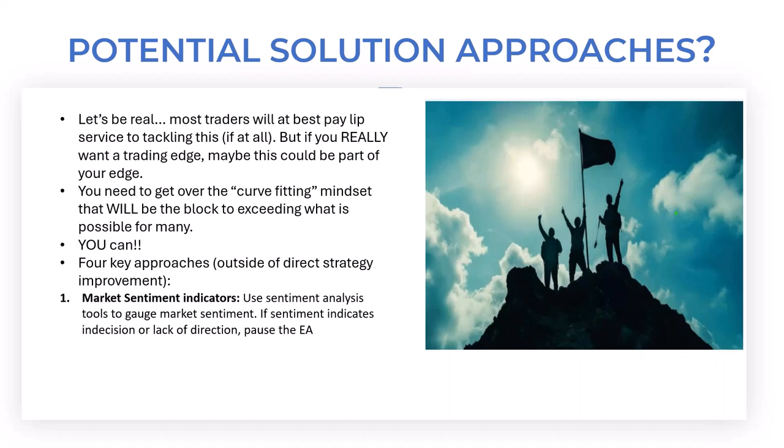For example, one of our simpler models — the EMA cross — is based on a simple cross of a 15 MA, but we want confirmation on the four-hour chart that there's been a pullback and subsequently a move to the upside. We can use sentiment analysis tools to gauge market sentiment, and if sentiment indicates indecision or lack of direction, then pause your EA or pause your strategy from a discretionary point of view.